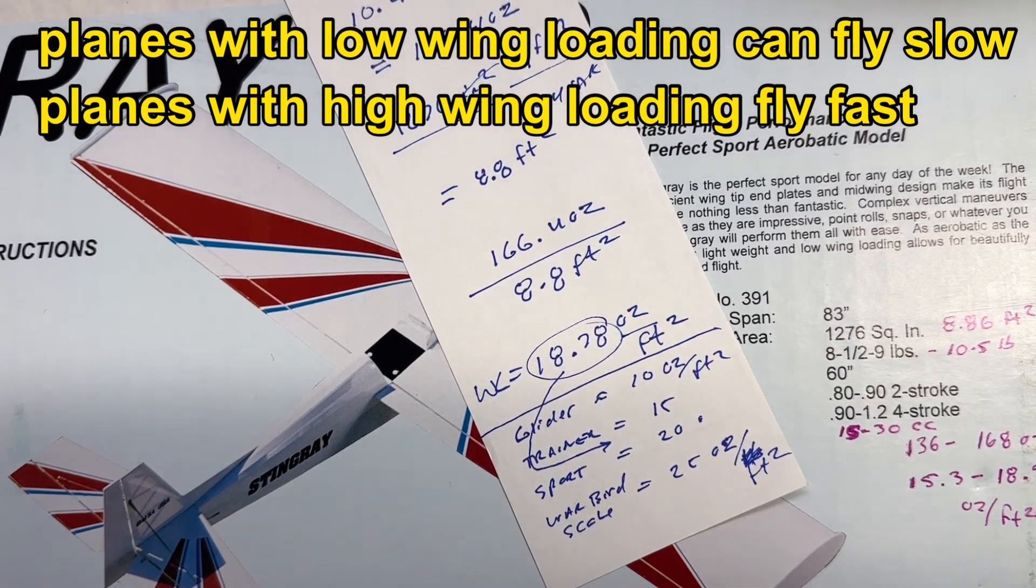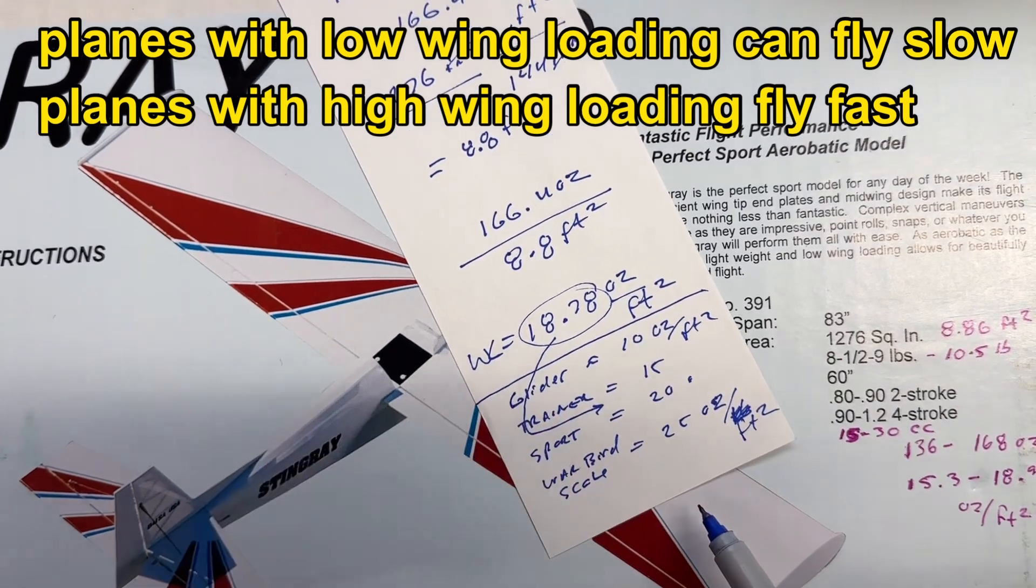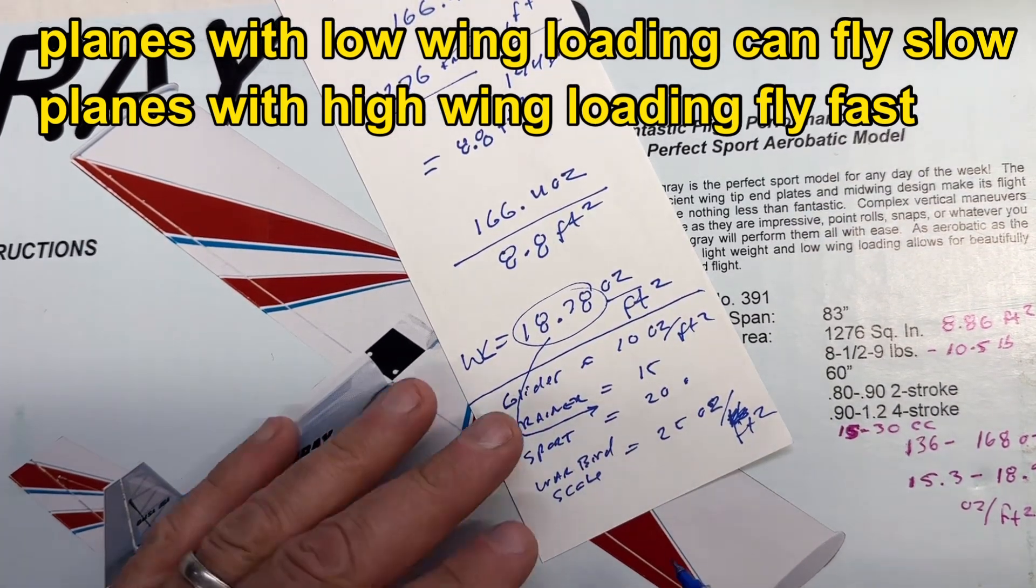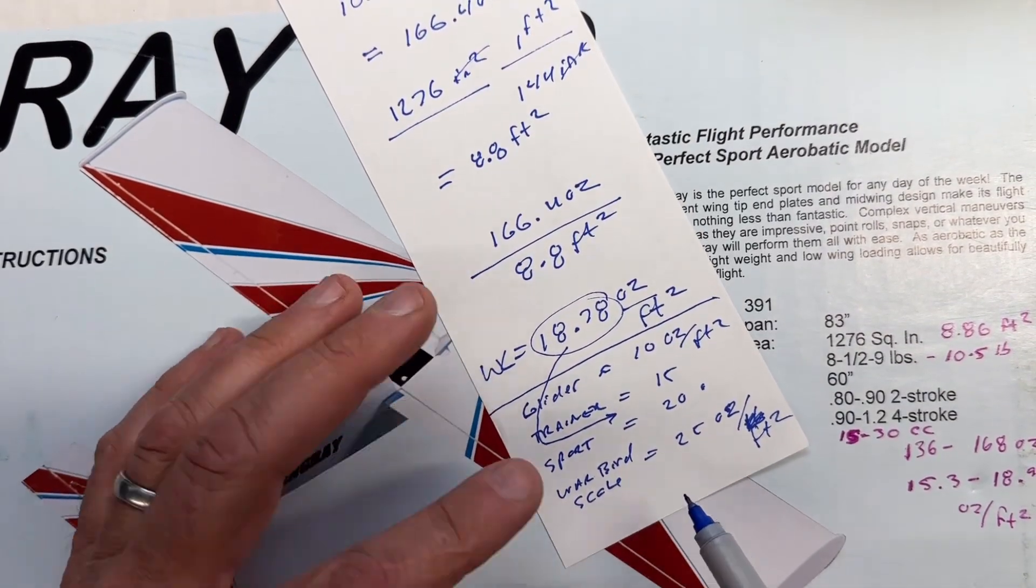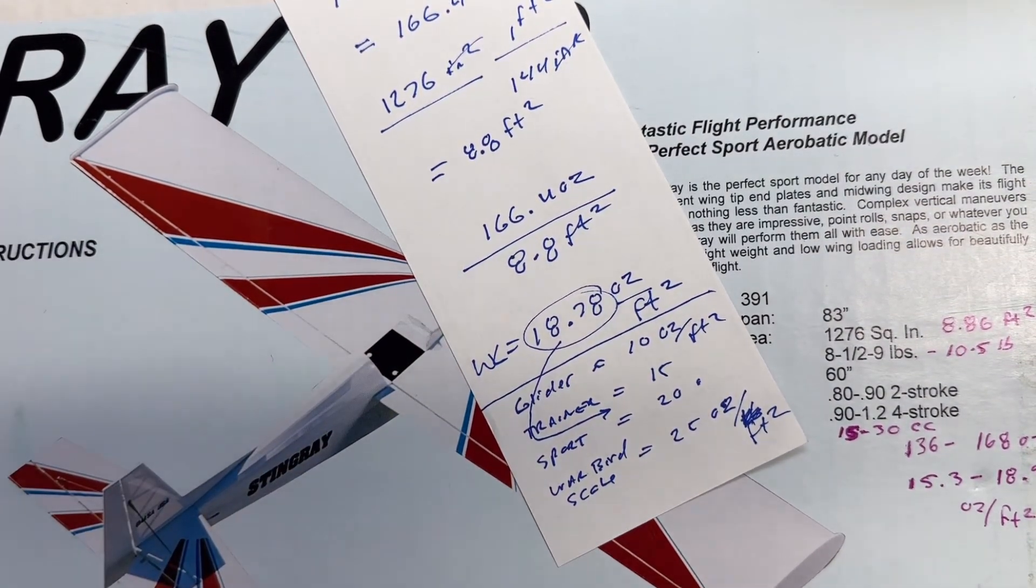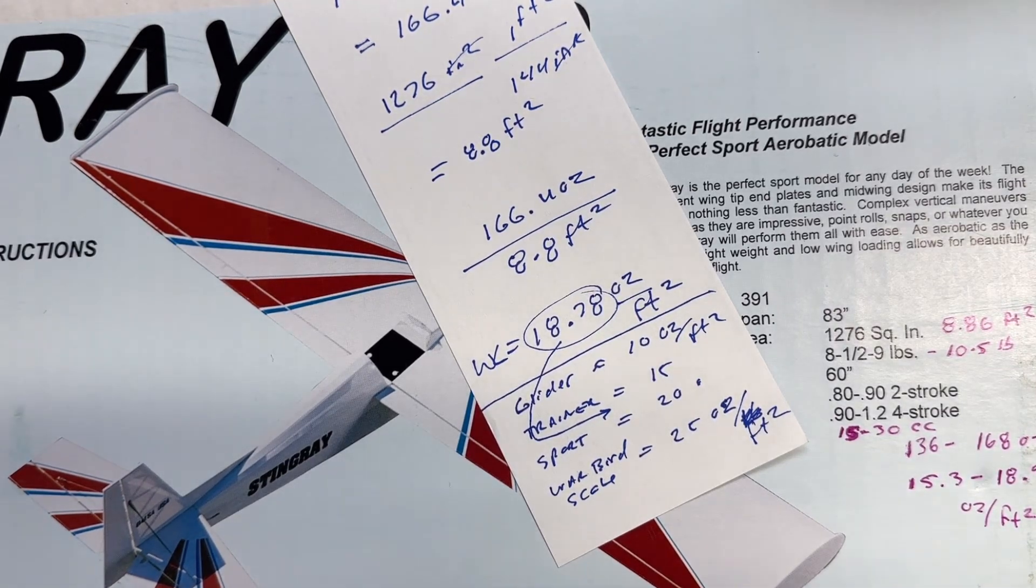The opposite end of the spectrum is you have a plane which has a really small wing area. And again, something like your World War II, like your warbirds, think about a jet, things like this. They have a pretty small wing area compared to their weight. And they're going to have to fly very fast in order to achieve that lift on that smaller wing with that higher weight.